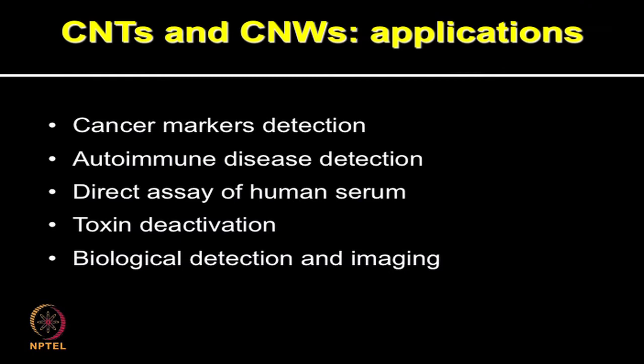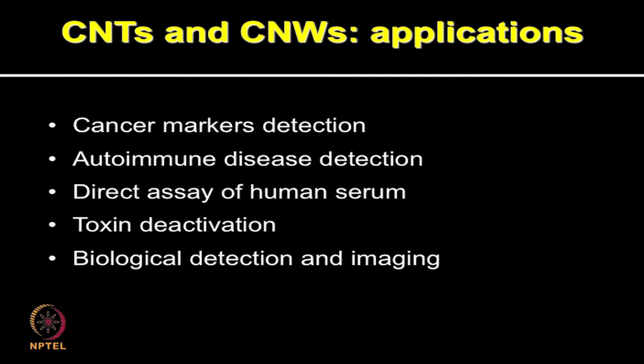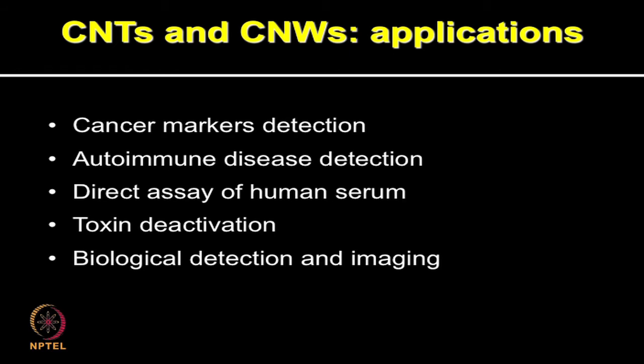After looking at the principle of nanotubes, let us briefly discuss their applications. Carbon nanotubes and nanowires have shown great potential for various applications. Our discussion here will be centered on applications in the context of proteomics. Various types of clinical studies have been performed using nanotubes and nanowires to test their potential for cancer biomarker detection, autoimmune disease detection, direct assaying of human serum, deactivation detection of toxins, and biological detection and imaging.